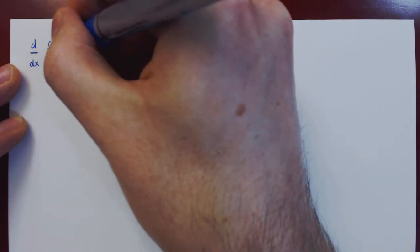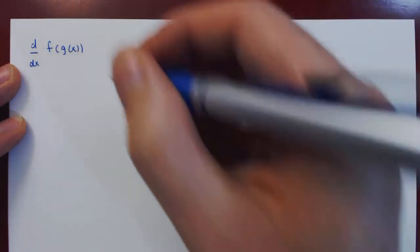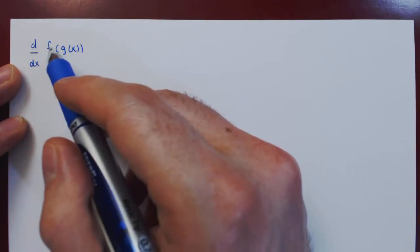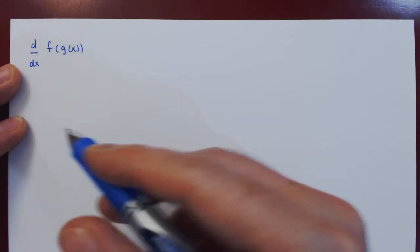So if you recall, the chain rule asks for the derivative of the composition between two functions, in this case f and g. So we ask, what is the derivative with respect to x of f of g of x?